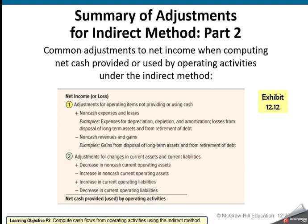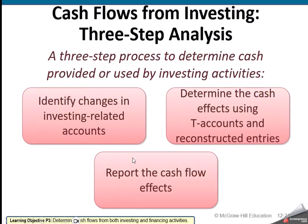Here is a summary table. This would be a nice thing to print out because it shows you examples of what we add back and what we decrease or increase. If it's a decrease, do we add it? If it's an increase, we subtract it. This might be a handy little table to print out and have with you when you're doing your homework and your test.